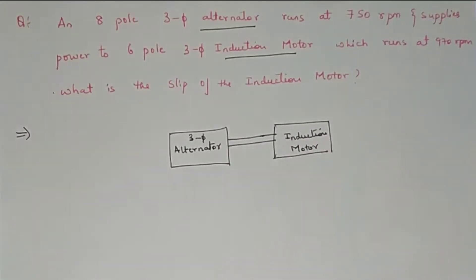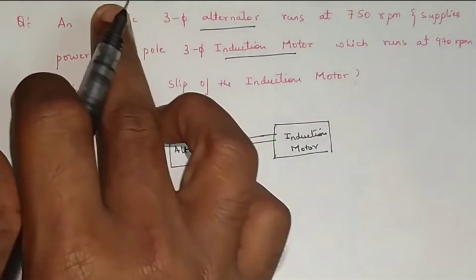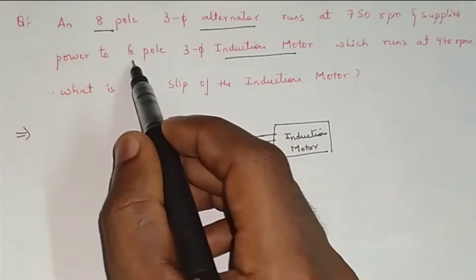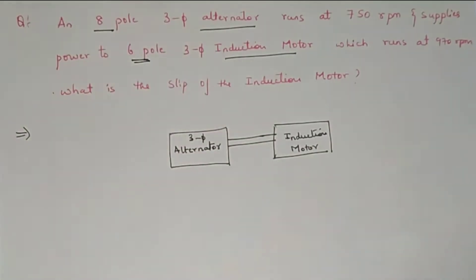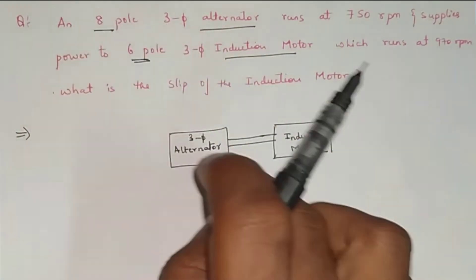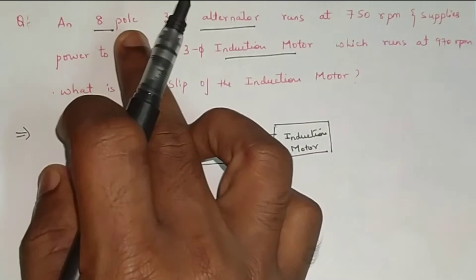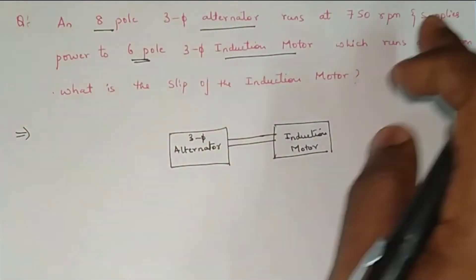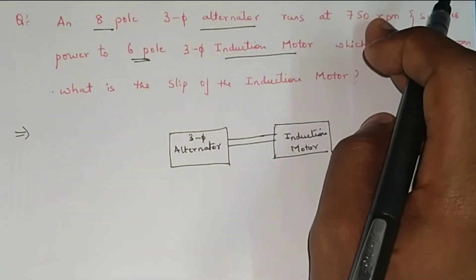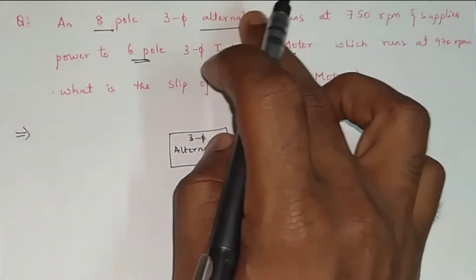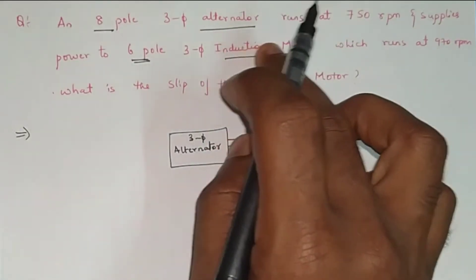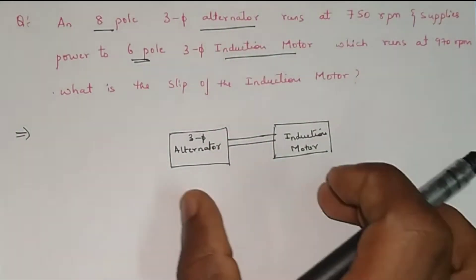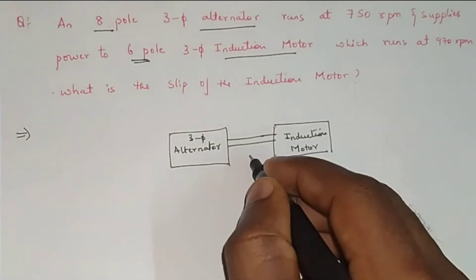Now, eight poles is given for the alternator and six poles is given for the induction motor. It is very important to differentiate for which machine the number of poles has been given. Similarly, speed is also given twice — one for the alternator and one for the induction motor.